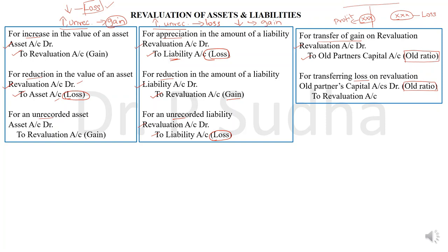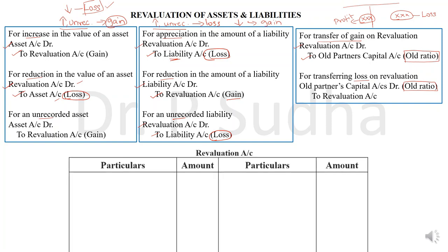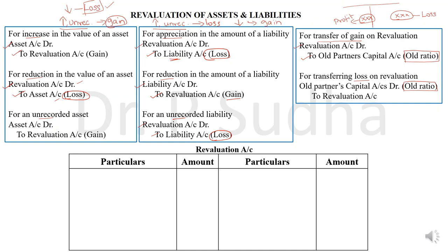At times in a question, you will be asked directly to prepare the revaluation ledger account without preparing journal entries first. This revaluation account is a type of nominal account. The rule of a nominal account is: debit all expenses and losses; credit all incomes and gains. So if there is a loss, we will debit it in the revaluation account. If there is a gain, we will credit it.